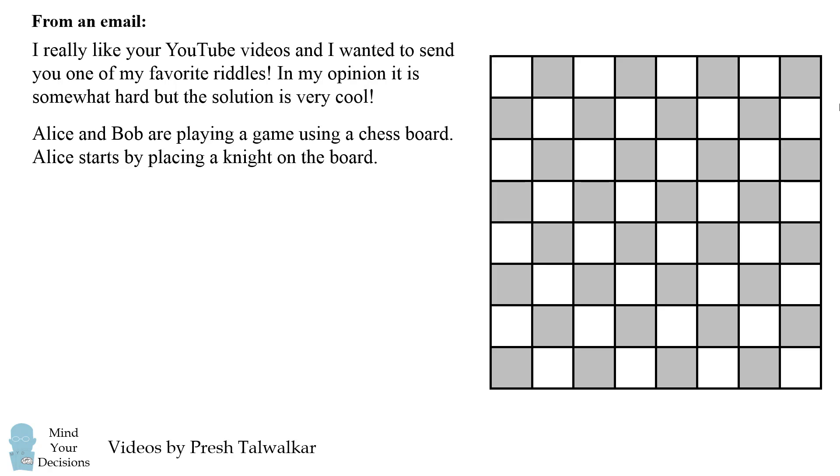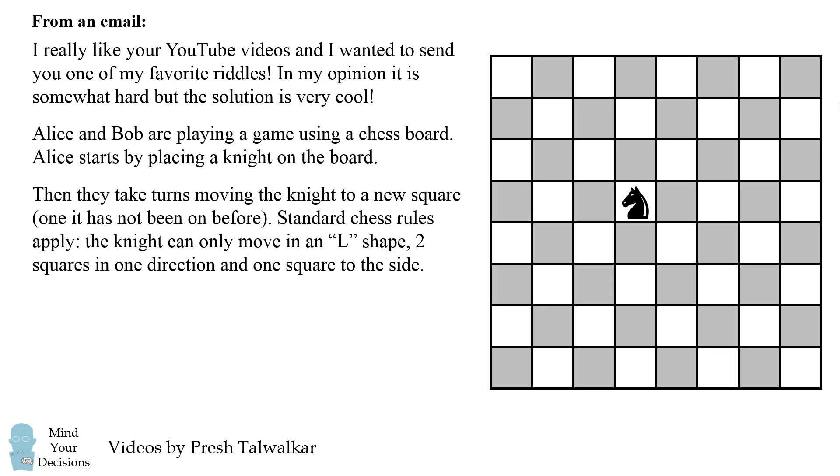Alice and Bob are playing a game using a chessboard. This is an 8x8 grid. Alice starts by placing a knight on the board. Then they take turns moving the knight to a new square, one that it has not been on before.